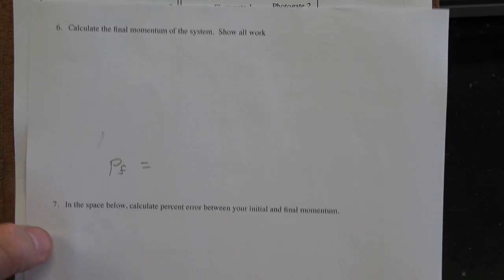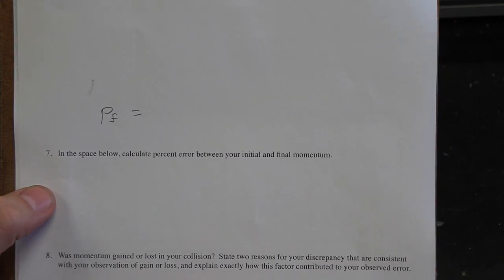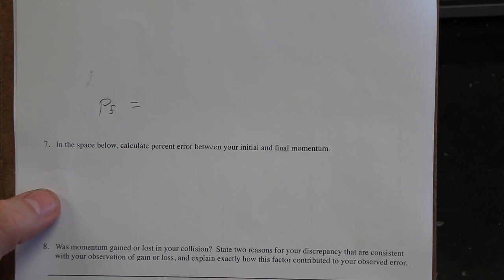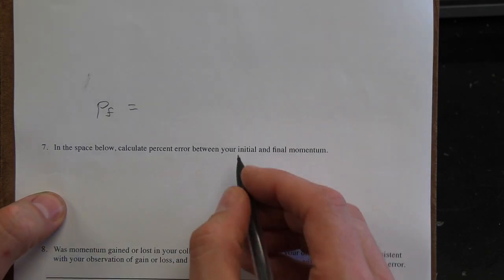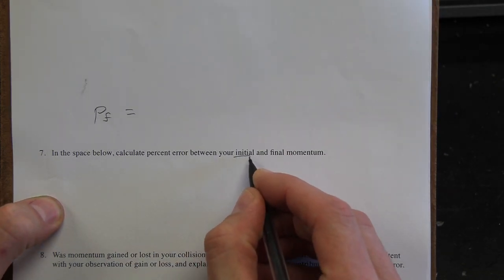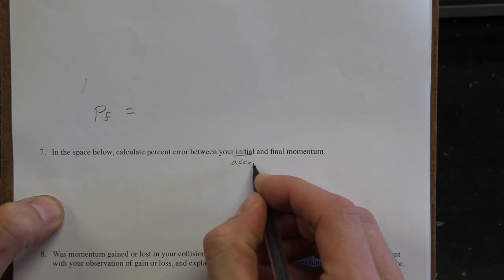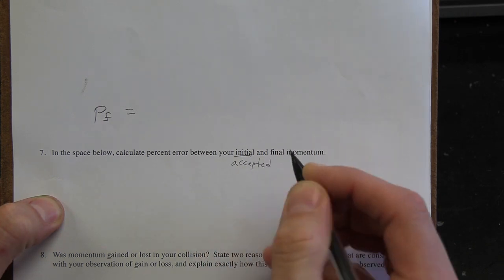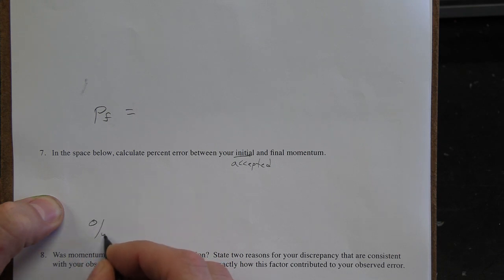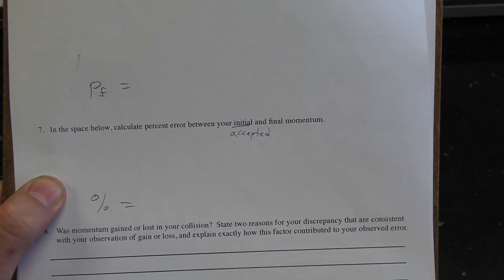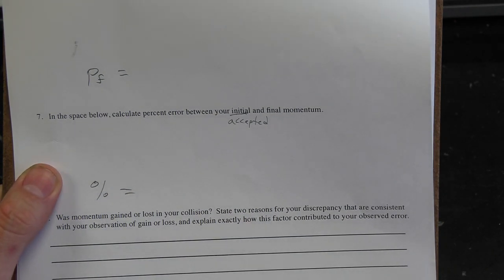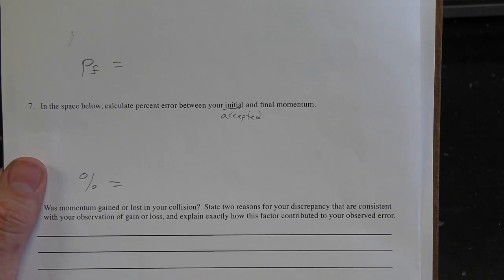Okay, number seven. Calculate the percent error between your initial and final momentum. Go ahead and consider this the accepted value. So when you're all done, you'll have percent equals and then an answer. So go ahead and calculate that now.